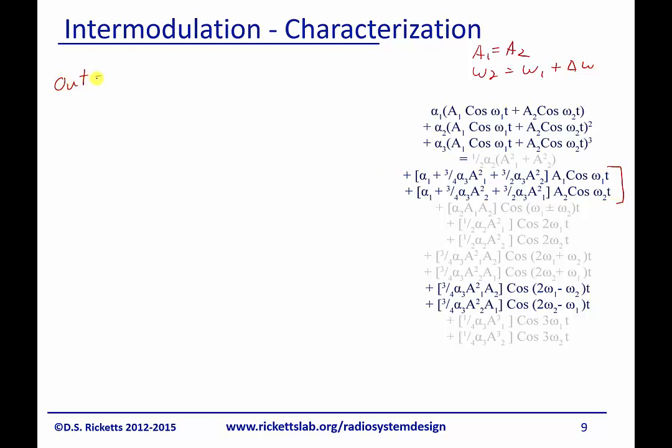So our output is going to be equal to alpha 1 plus 3 quarters alpha 3 plus 3 halves alpha 3 times A cubed. Now why I was able to do that? Well, this A1 is the same as A2, is the same as A1, so I can just multiply this in here and multiply this in here. I get A cubed.